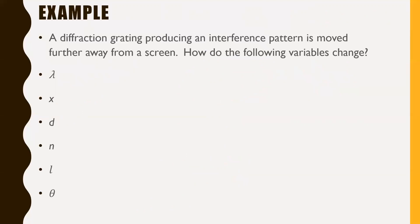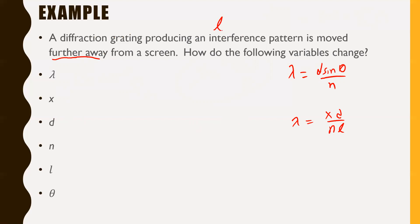Last question: a diffraction grating producing an interference pattern is moved further away from a screen. How do the following variables change? Moving further away means L is increasing. We have two formulas: λ = D·sin(θ)/N and λ = XD/NL. L increasing is the given condition, so we can immediately say L is increasing. Let's go through each variable.